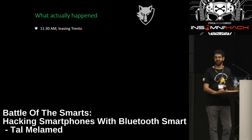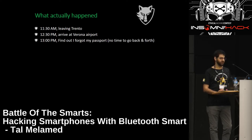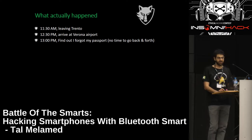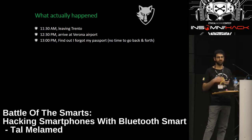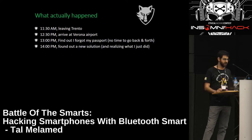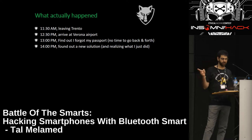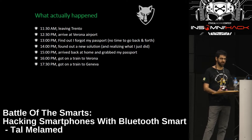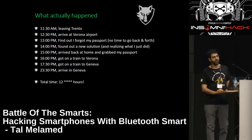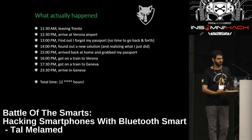What actually happened: at 11:30 a.m. I left Trento, arrived at Verona airport one hour later. After doing security checks, I realized I forgot my passport at home and there was no way to go back and forth in time. I tried to convince them to let me fly anyway — it didn't work. I checked trains, everything. At 2 p.m. I found a solution: go back to Trento, take my passport, get on a train to Verona, then take a seven-hour train to Geneva. I arrived not at 11:30 but at 1 a.m. at the hotel. So instead of a one-hour flight, it took me more than 12 hours to get here — but I'm still here.